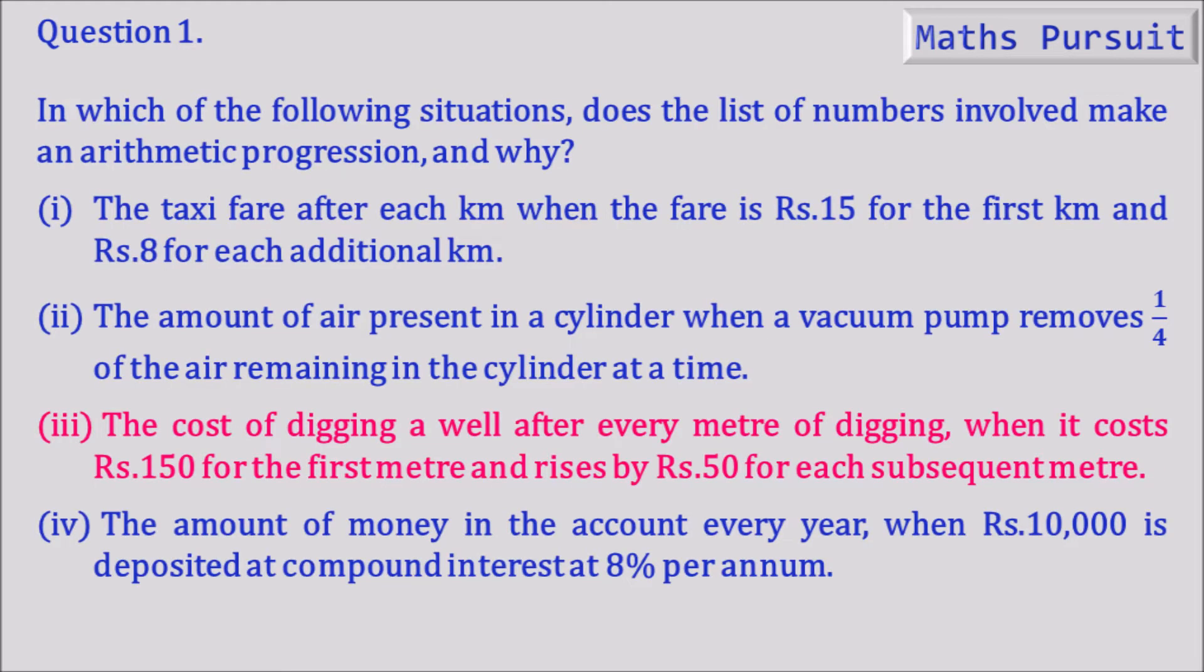Moving on to the question, it is given: in which of the following situations does the list of numbers involved make an arithmetic progression and why? Part 3 is the cost of digging a well after every meter of digging when it costs Rs.150 for the first meter and rises by Rs.50 for each subsequent meter.